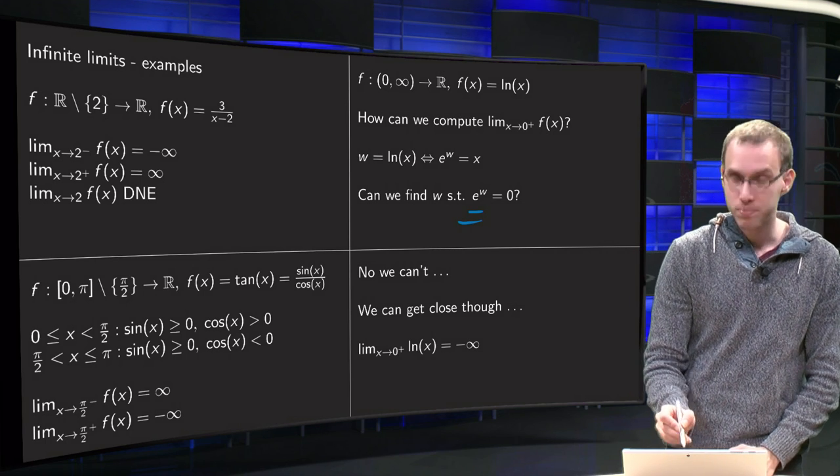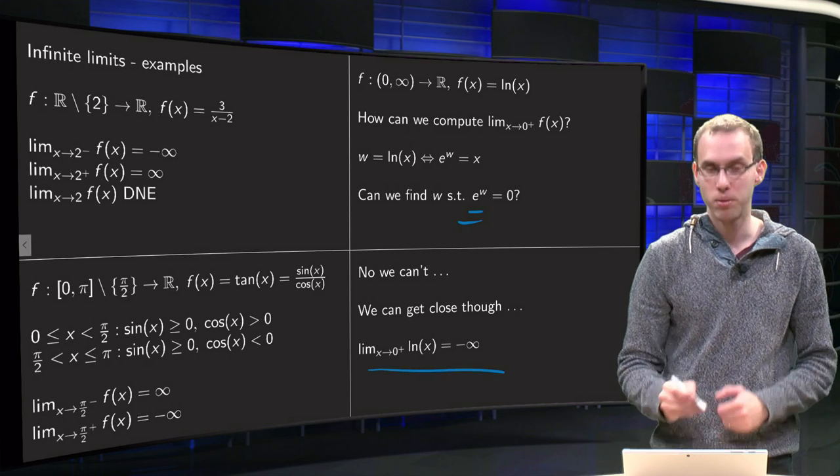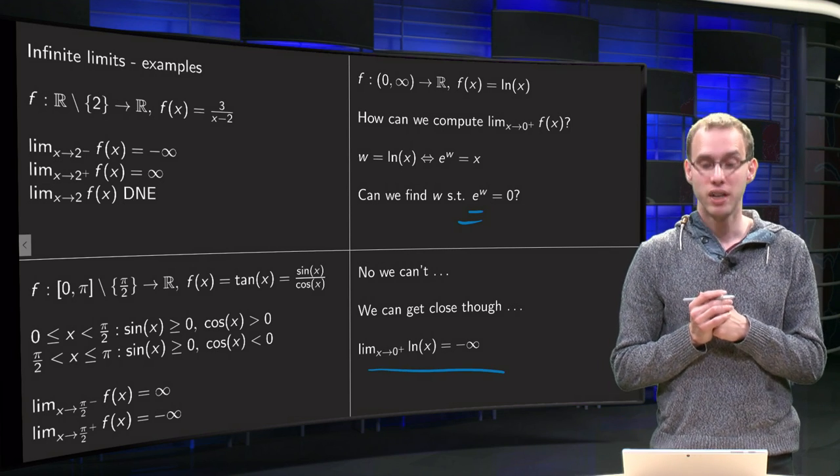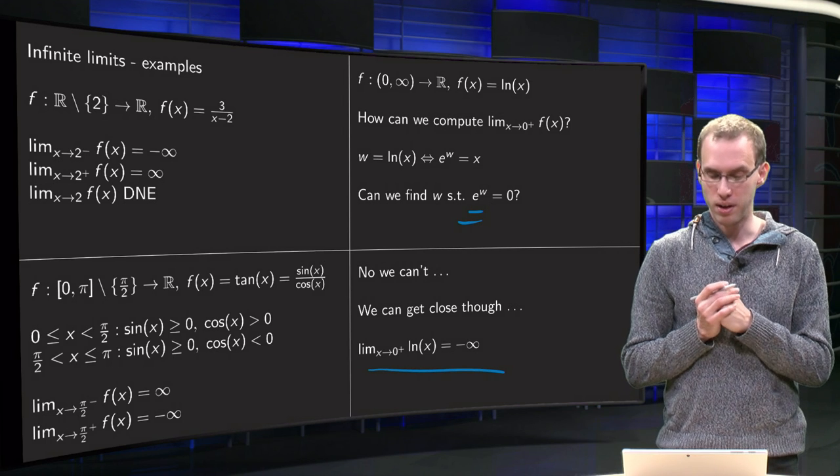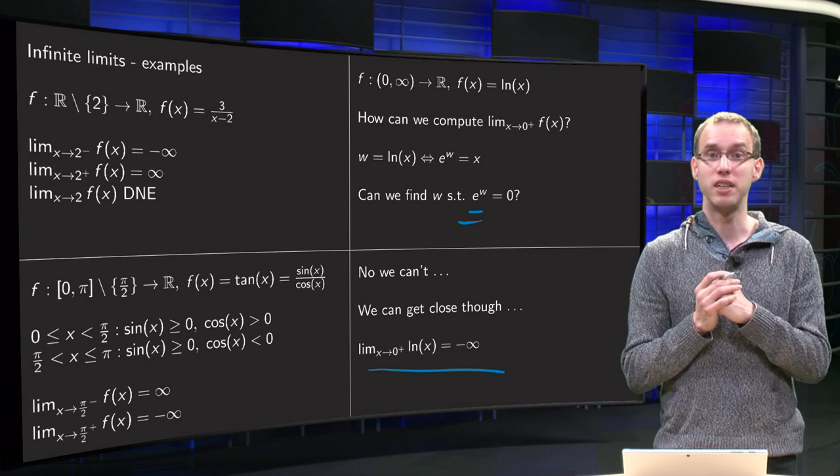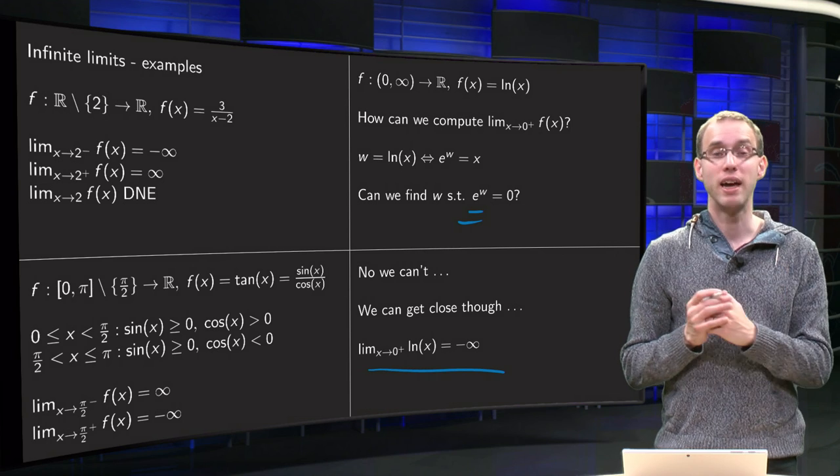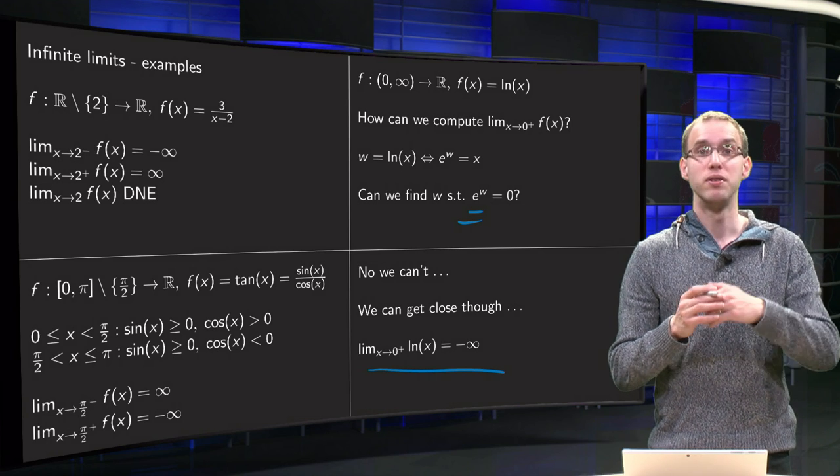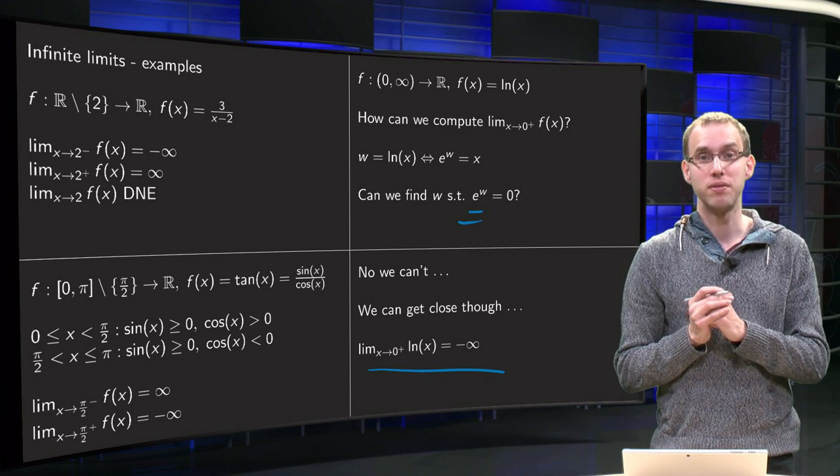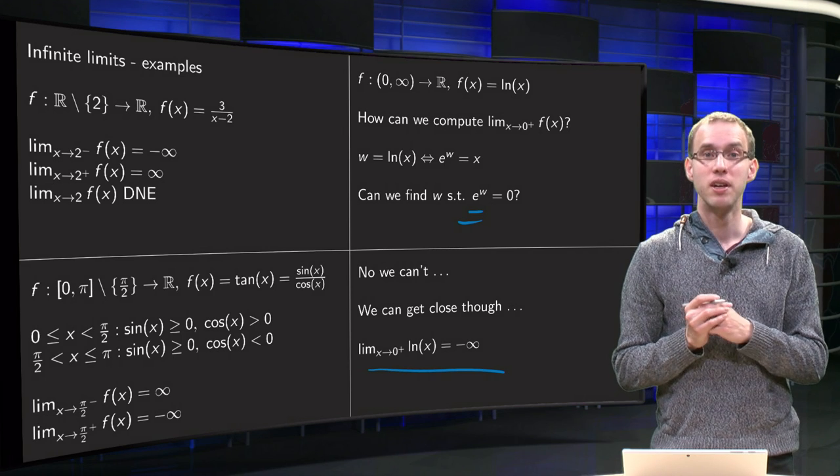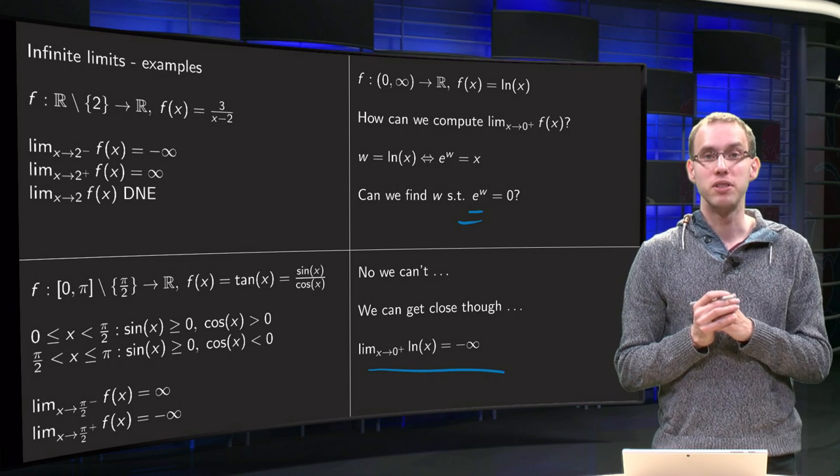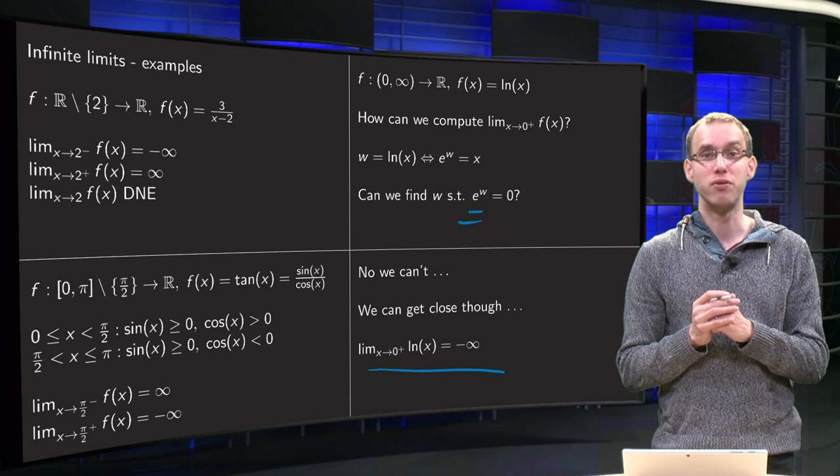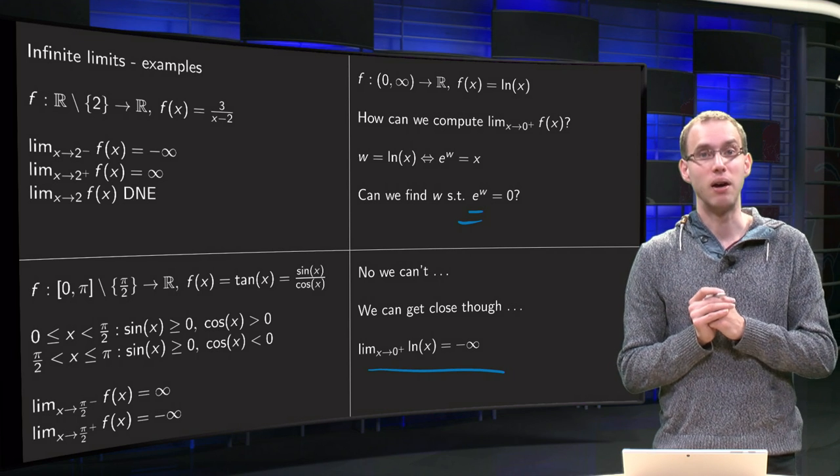so that means that this limit x to 0 plus of ln of x equals the w equals the minus infinity, so also in ln of x we have a negative infinity limit. So you see, those limits occur in many basic functions, so it's good that we now know about them.